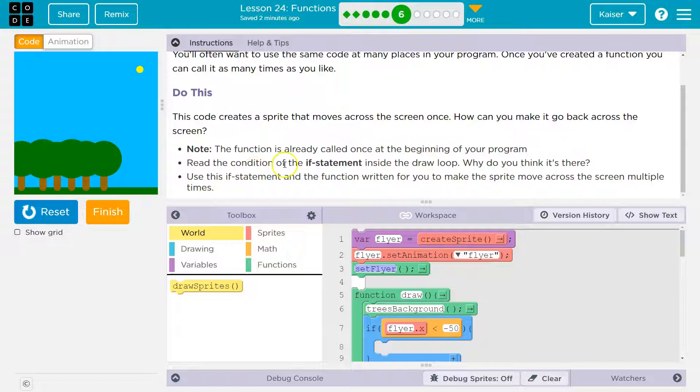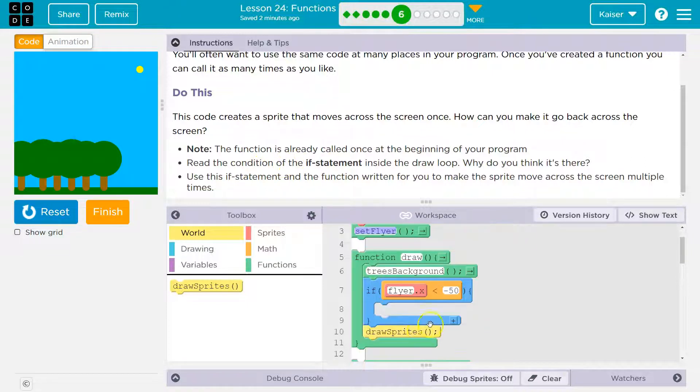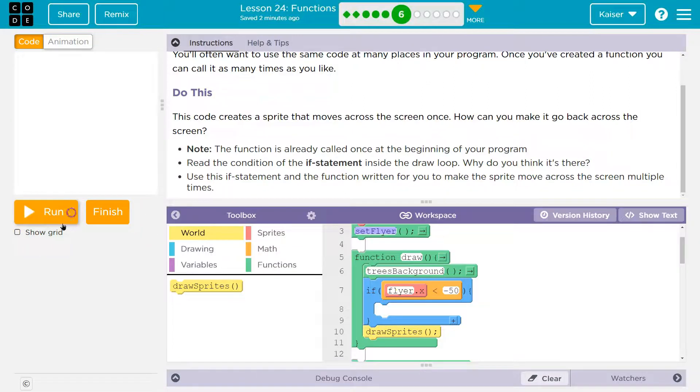Read the condition of the if statement. Okay. So here's my if. If the flyer's x value is less than negative 50. Well, where's that? It's going to be shown down here and here. Here's my x value at 40. Here it is at zero-ish. Okay. So if it's less than negative 50, it would be like here, right? So it'd have to be way off the screen.